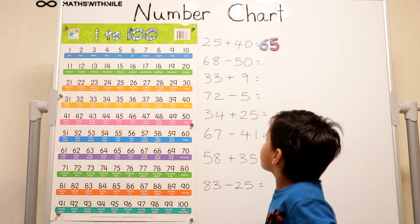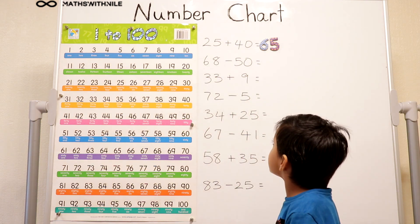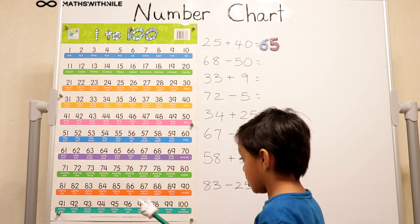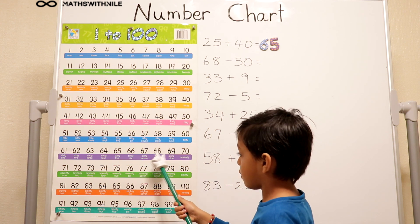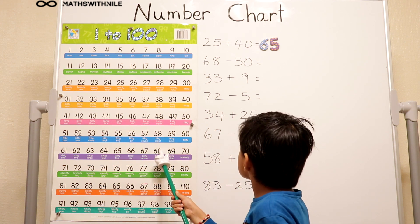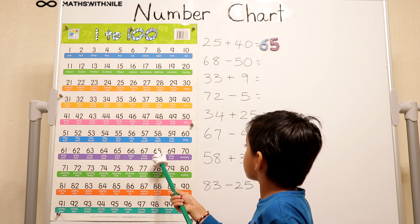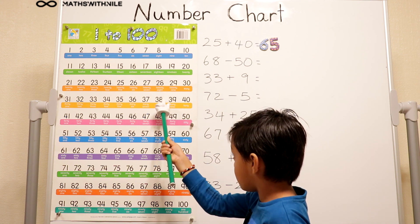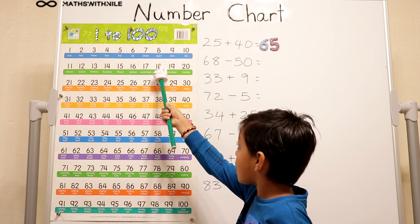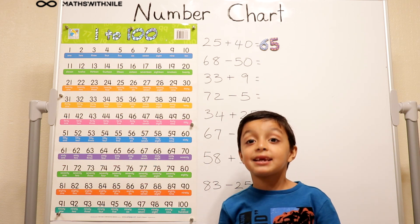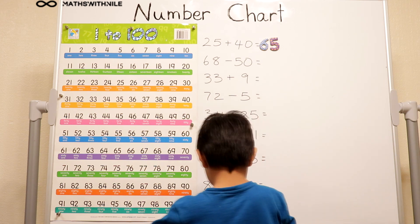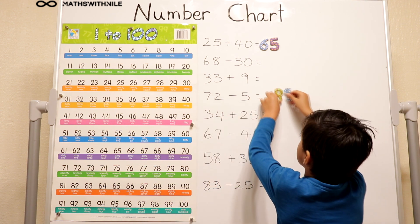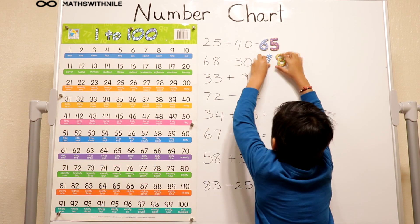Next one. Next question. 68 take away 50. So first we have to go to 68 which is right here. Take away 50. So take away 30, 10, 20, 30, 40, 50. So now it equals 18. So I'm going to get my trans up and run it up. 18.